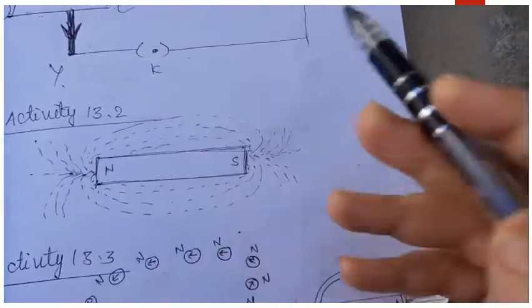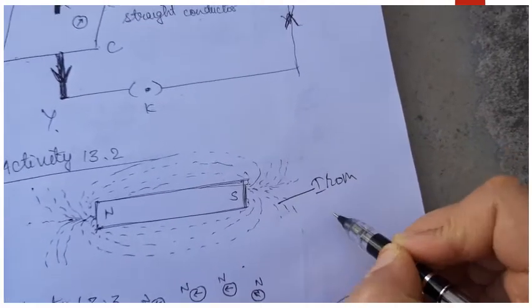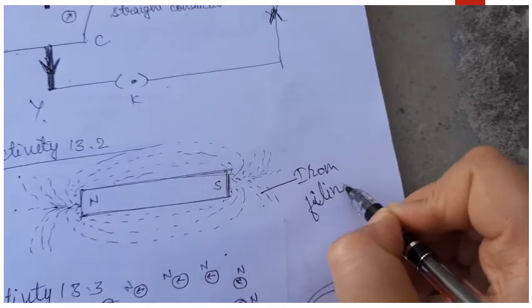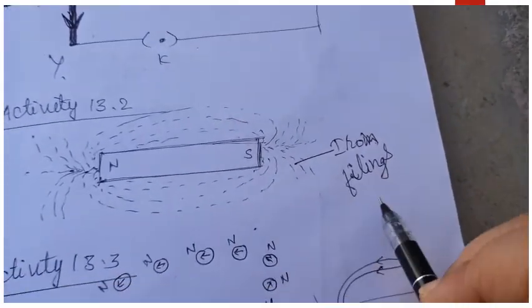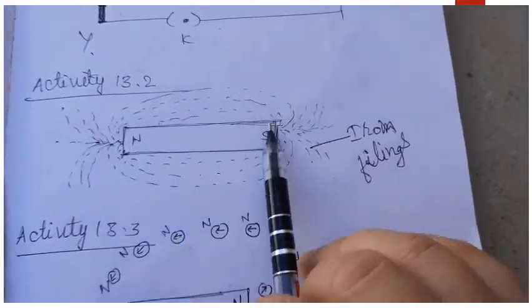Activity 13.2. In this activity we have to take iron fillings. Iron fillings are powdered iron, nothing but powder iron, iron powder. So we take iron fillings and we place a bar magnet, it's a normal magnet, and we spread iron fillings around it randomly.